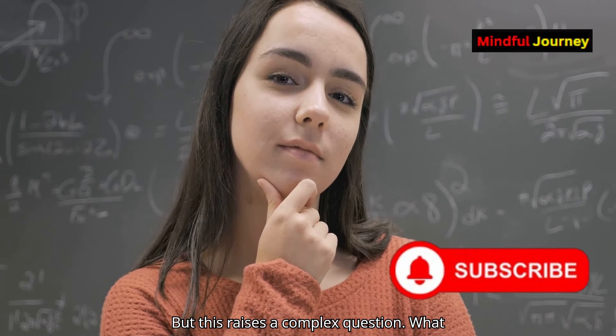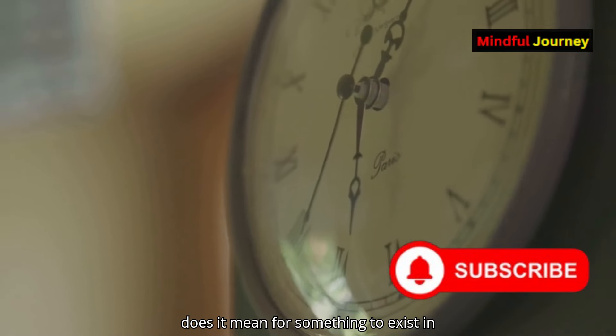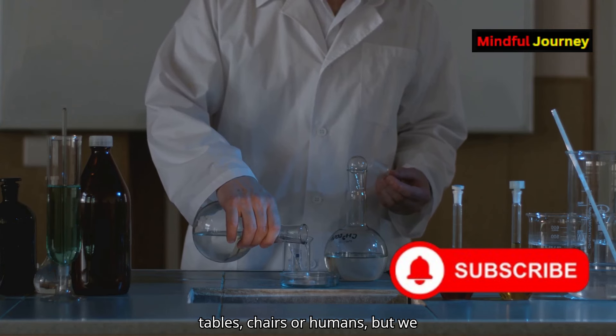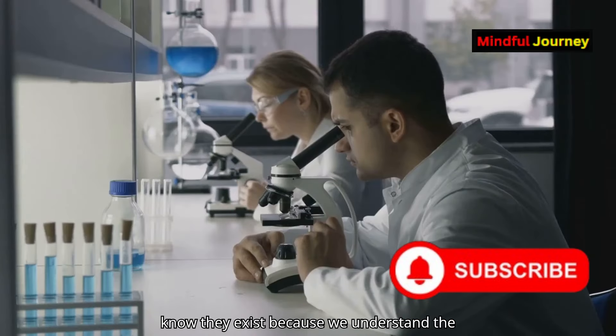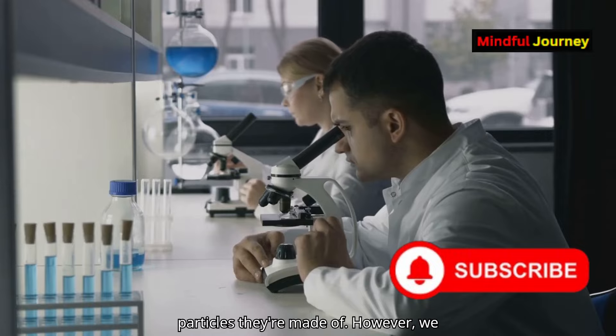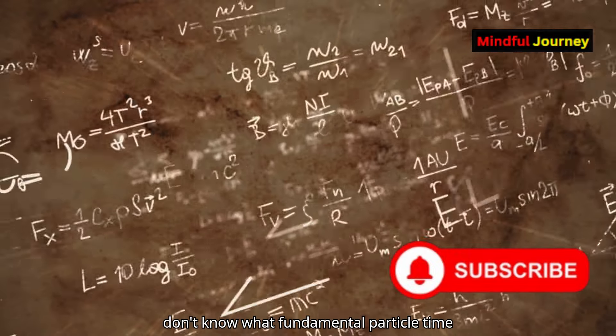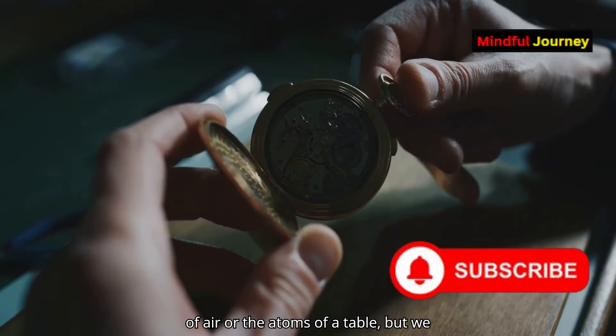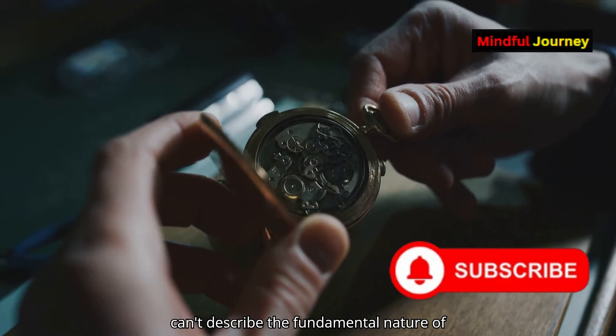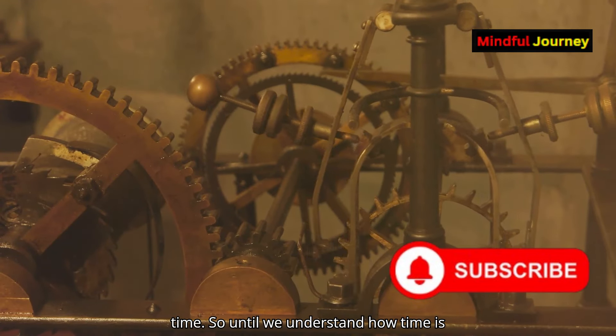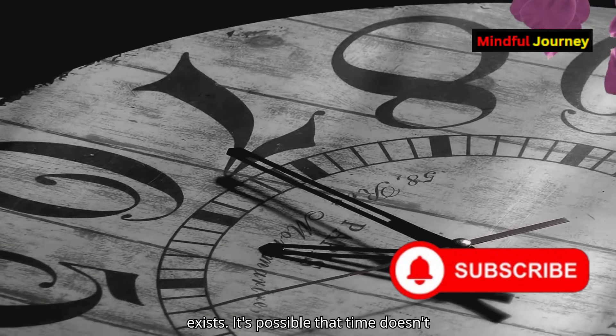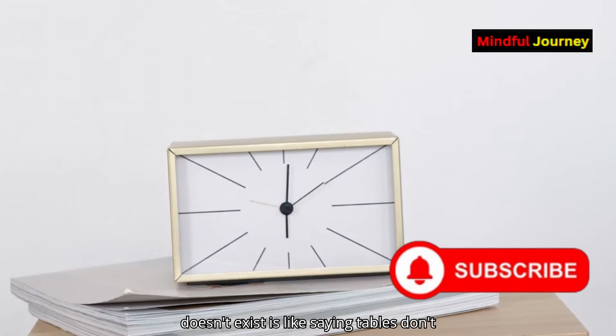But this raises a complex question. What does it mean for something to exist? In physics, we don't directly account for tables, chairs, or humans, but we know they exist because we understand the particles they're made of. However, we don't know what fundamental particle time is made of. You can describe the elements of air or the atoms of a table, but we can't describe the fundamental nature of time. So, until we understand how time is created, we can't definitively say it exists. It's possible that time doesn't exist at any level. Saying that time doesn't exist is like saying tables don't exist.